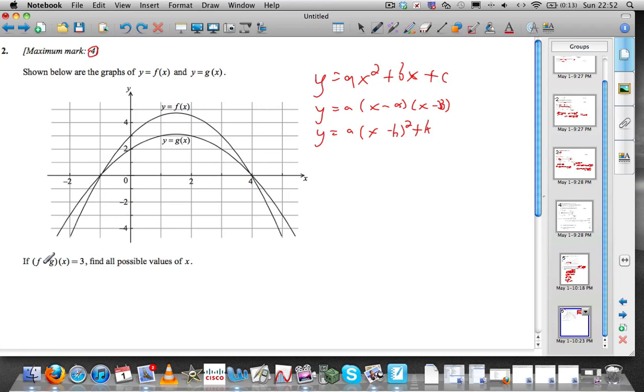Now the temptation is to put g into f and you get some crazy quartic. Now on a non-calc paper, that's not going to be the case. So it's a bit of a tricky one, especially for number two and only four marks.